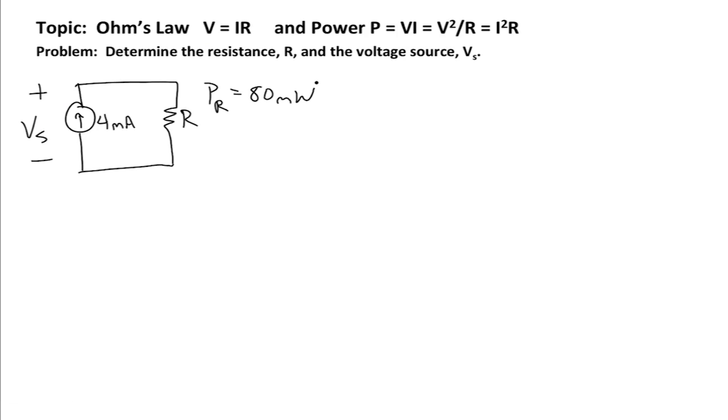In the passive sign convention, the current is assumed to enter the positive side of the voltage polarity across the element. So if we assign the current to go clockwise around this single loop circuit, then the voltage drop across the resistor V sub R is going to be as shown in the circuit now.